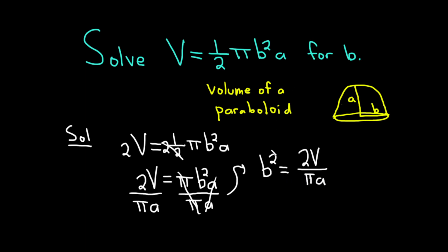And now to solve for b, we need to get rid of the squared in the exponent. So we can just take the square root of both sides. And when we do that, we do get a plus or minus. But if you look at the picture here, you can clearly see that b can't be negative. You can't have a negative length. So it must be positive. So b = √(2V/πa).